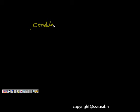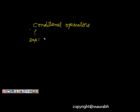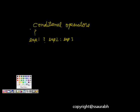In this lecture we will be studying about Conditional Operators. The main thing to understand is it has a question mark which represents a condition. It looks like: expression 1 — is it true? If it is true then expression 2 is evaluated, otherwise expression 3 is evaluated. Let's see with a concrete example.